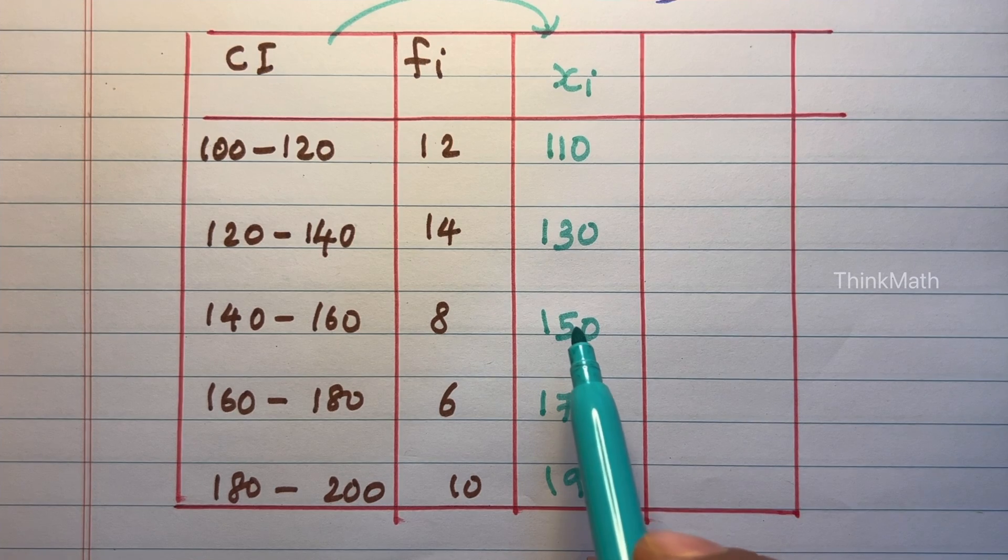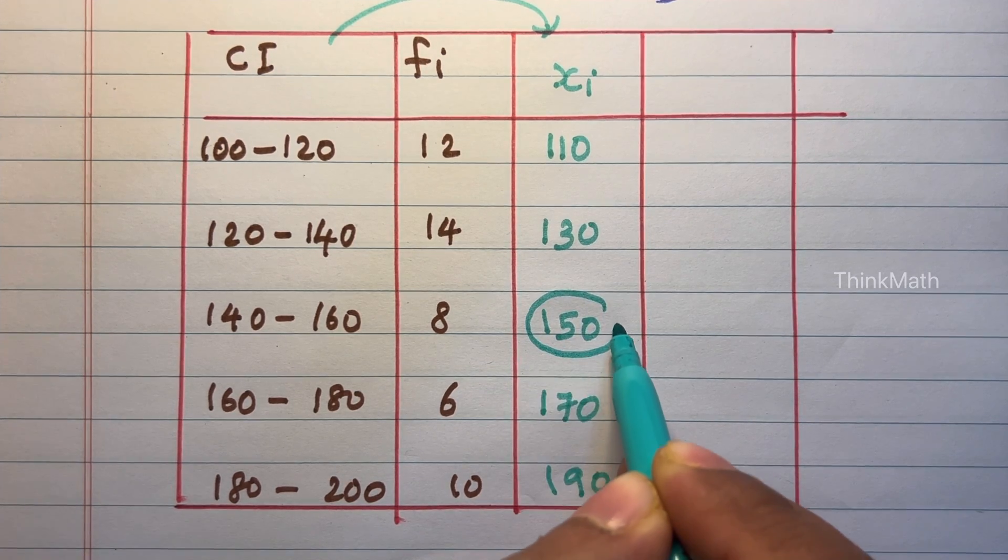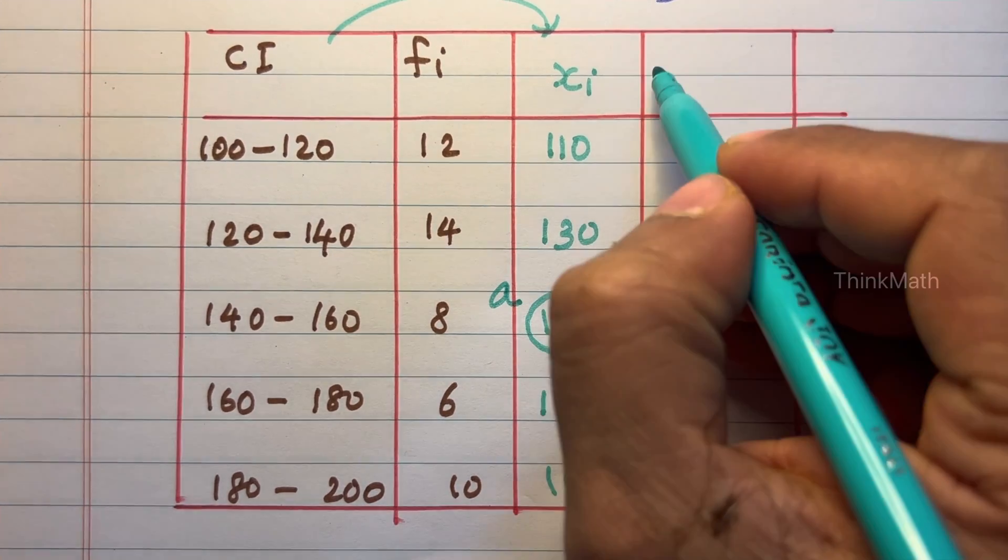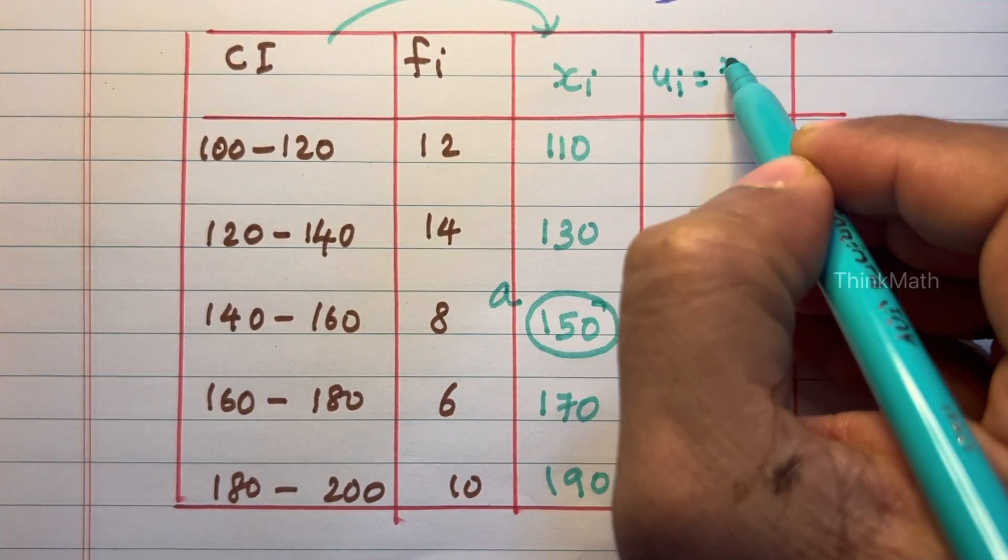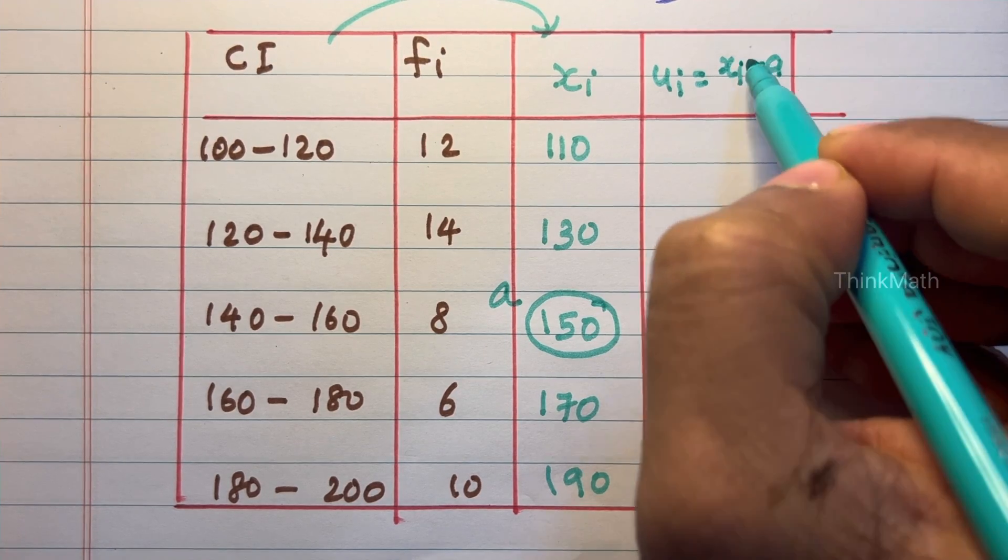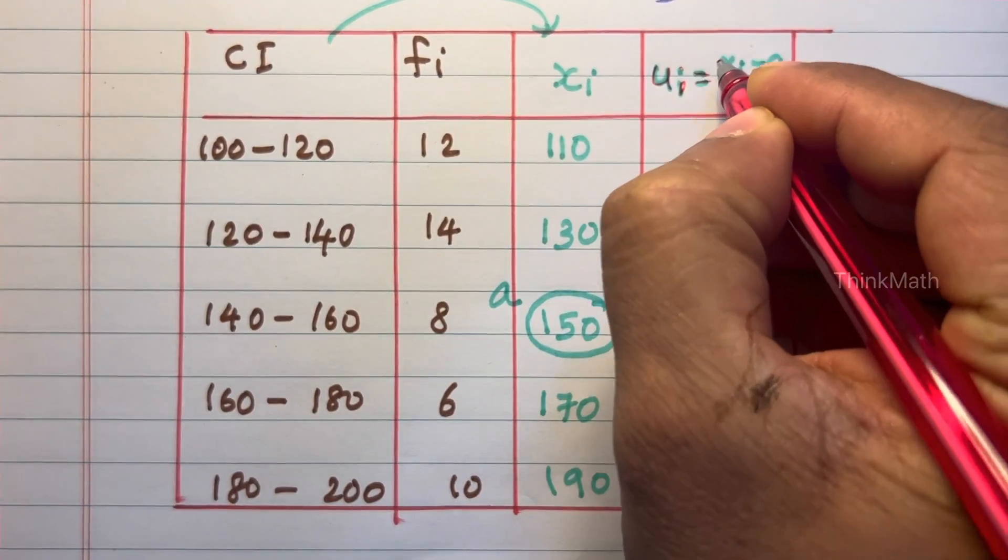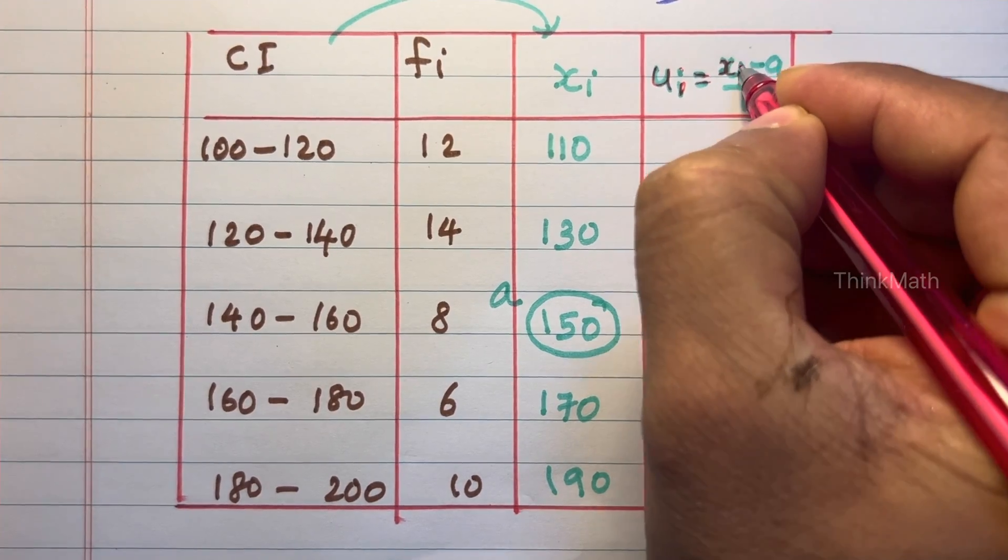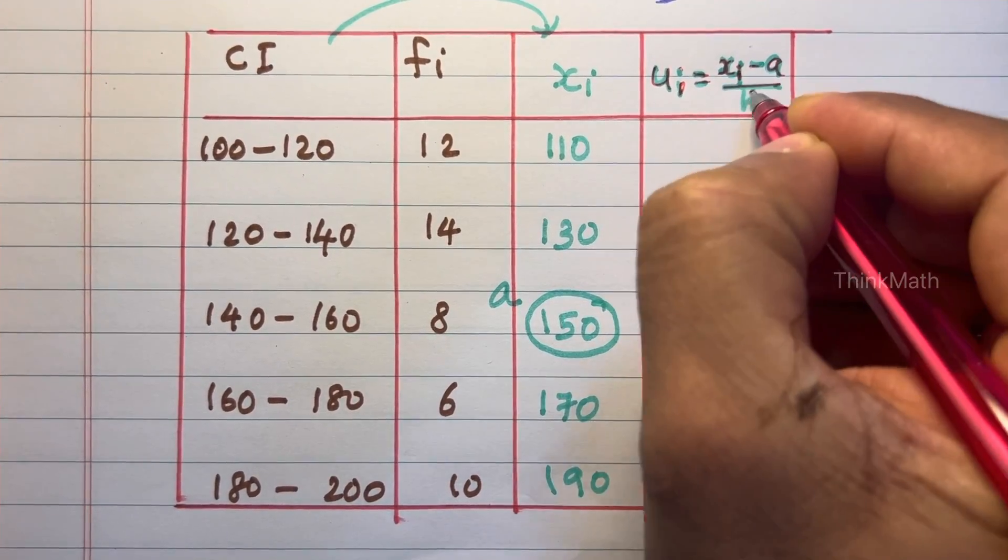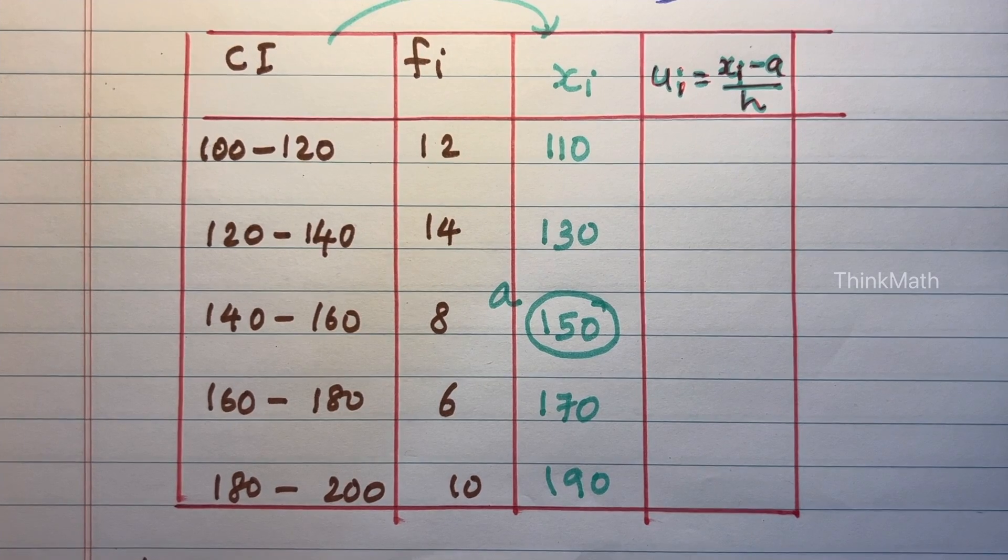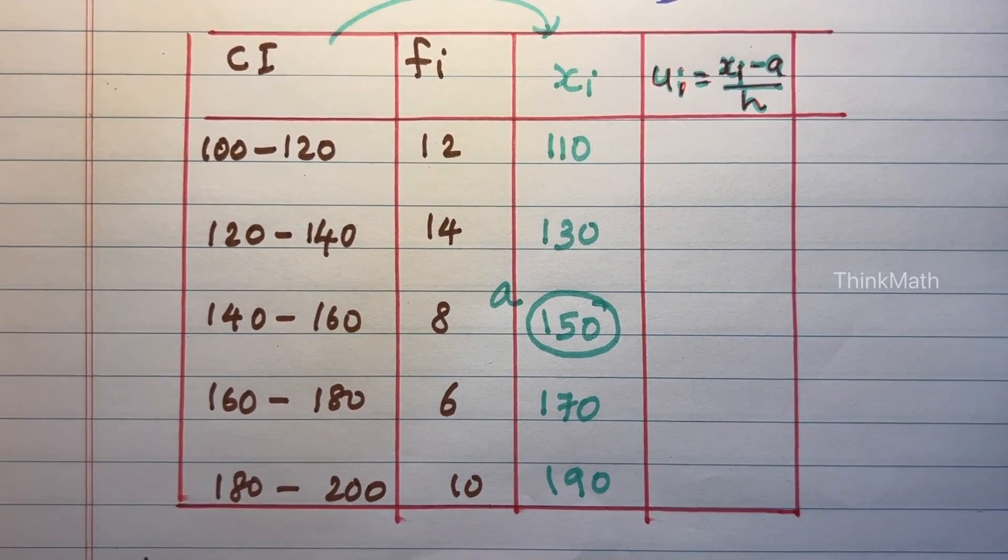Next, please select A, the middle term you can consider as A, the assumed mean. Now please find ui. ui is equal to xi minus A divided by H. So class size H is equal to 120 minus 100, that is equal to 20.